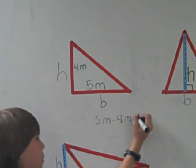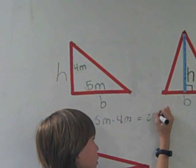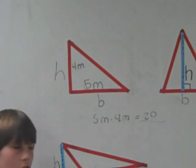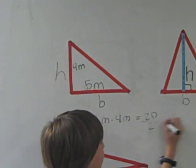We're going to do the base times height, which equals 20 meters, and divide it by 2 for the two triangles in a rectangle, which gives you 10.